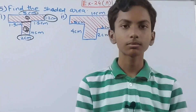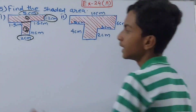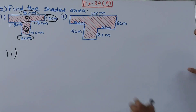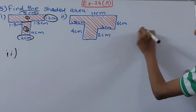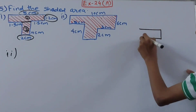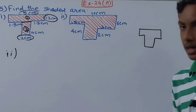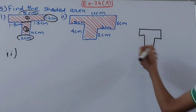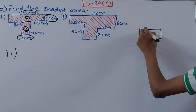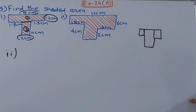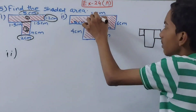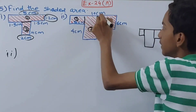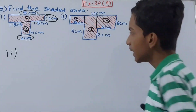Now let's move on to the second part. There are many ways in which this figure can be divided, but we cannot divide it into just two different parts at once. I'll divide it into three parts — parts one, two, and three.